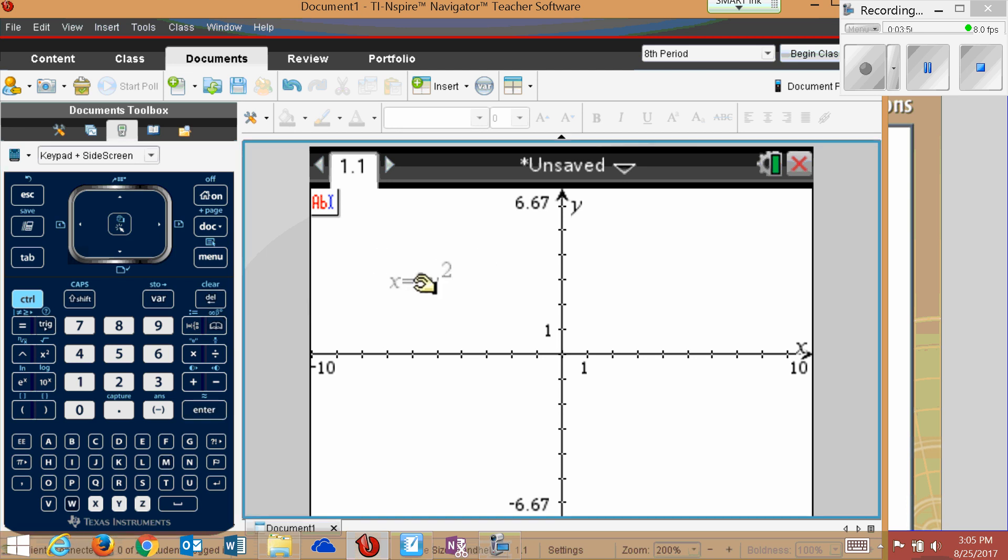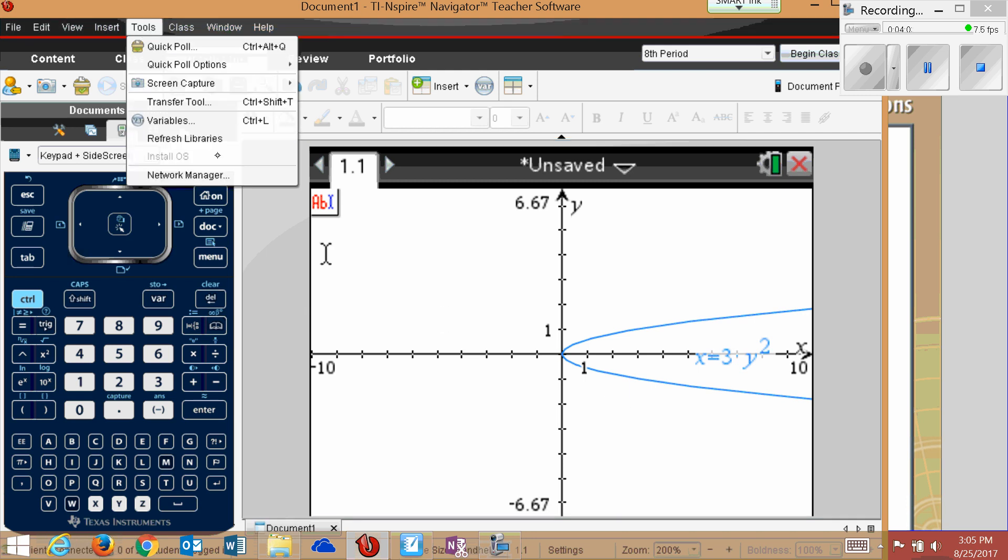When you type text, it won't graph right away. You have to take it to an axis. There's the picture. Now what I can do is I'm going to take this back over the start board.